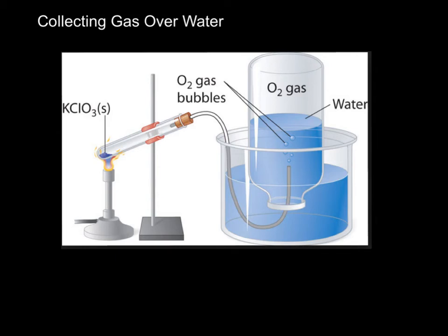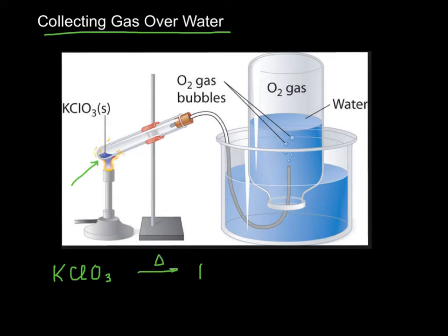A practical application of Dalton's Law is when we collect a gas over water in an experiment. For instance, in this lab, you can see in this test tube we've got some potassium chlorate, and we're going to heat it with a Bunsen burner. That makes some calcium chloride and some oxygen gas. What we're going to do is collect that oxygen by having it bubble through and up and into — it collects up here. So it bubbles through the water, and since it's lighter than water, it collects up above, so we can collect our oxygen in a container.